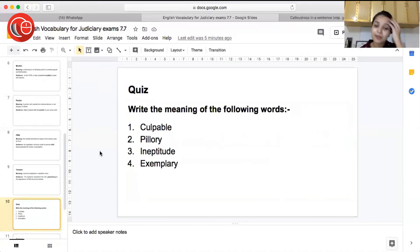So now these were the words for the day. Now it's time for the quiz. Please write the meaning of the following words. First word is culpable. Second, pillory. Third, ineptitude. Fourth, exemplary. Please write the meaning of the following words.